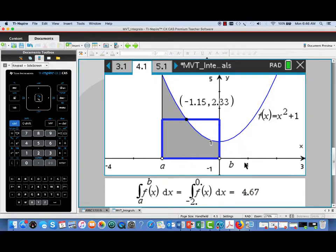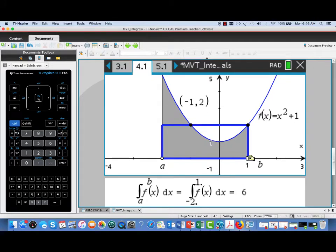I'll move b over to 0. We've got a new definite integral value that's actually 4 and 2 thirds. The length of our interval is 2. So our average value is going to be 2 and 1 third, and we see there is indeed a point where the function value takes on exactly that average value.